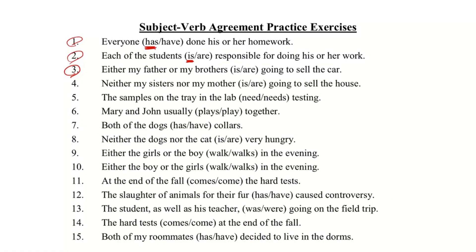...my brothers — we're going to take the subject closer to the verb. We're considering 'brothers,' so we'll say 'are.' Number four: neither my sisters nor my mother — same rule applies, we have 'sisters' and 'mother.'